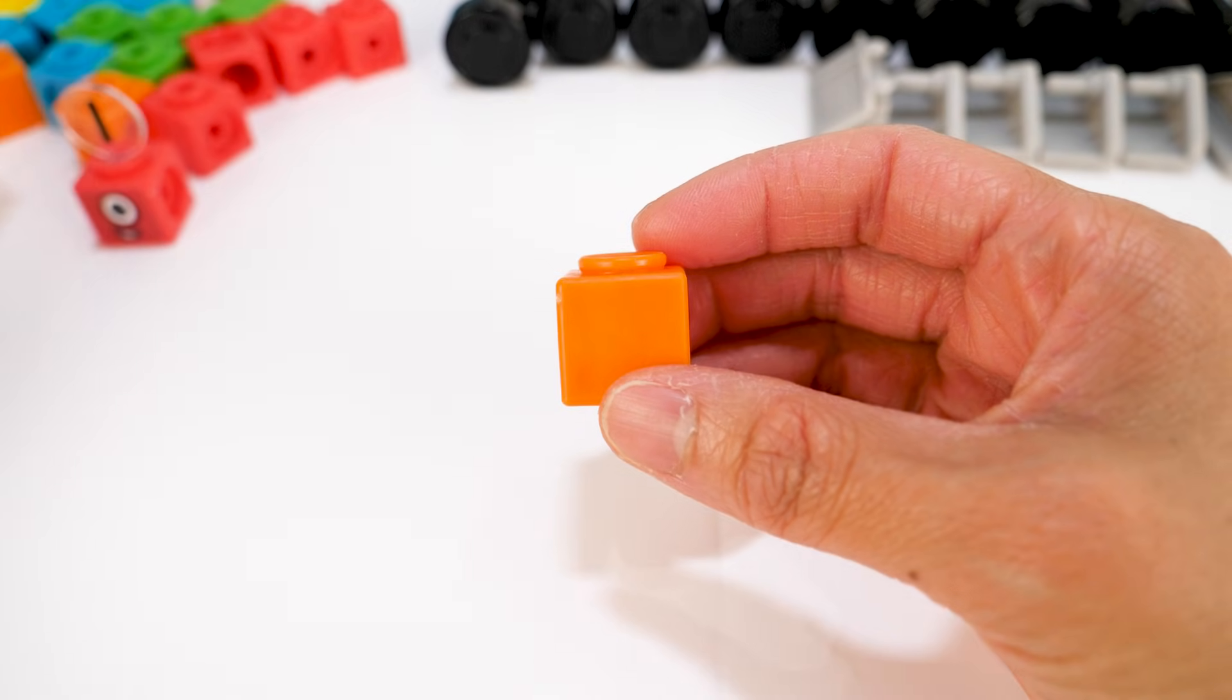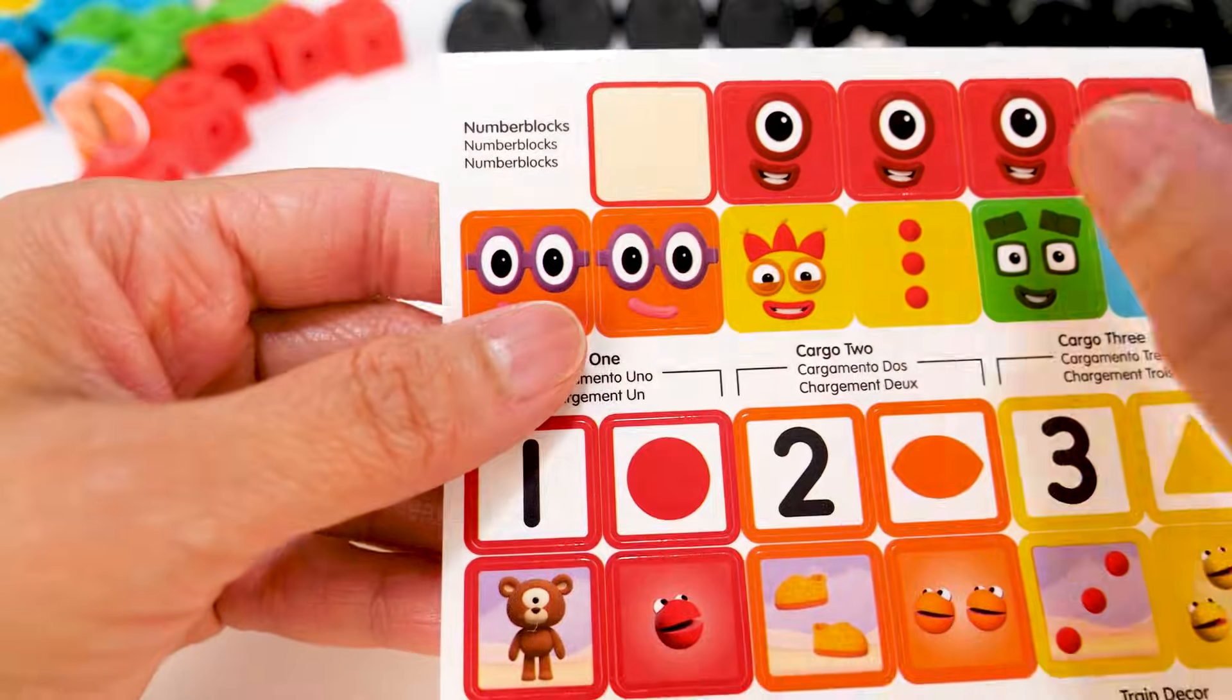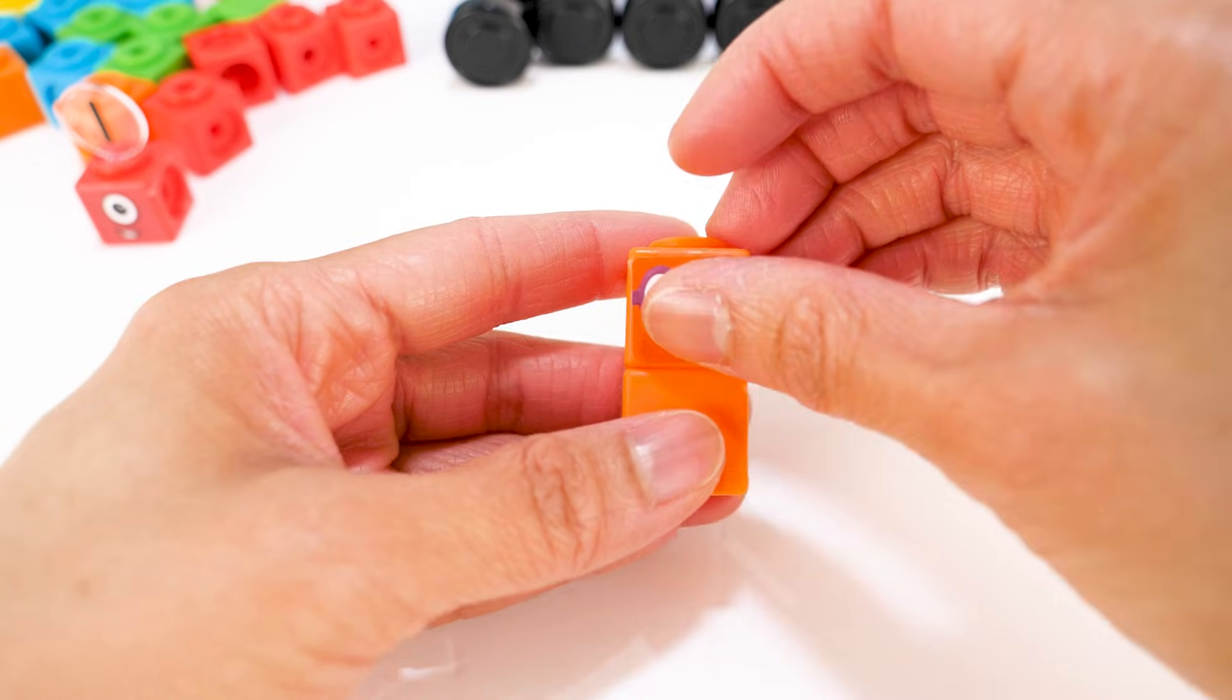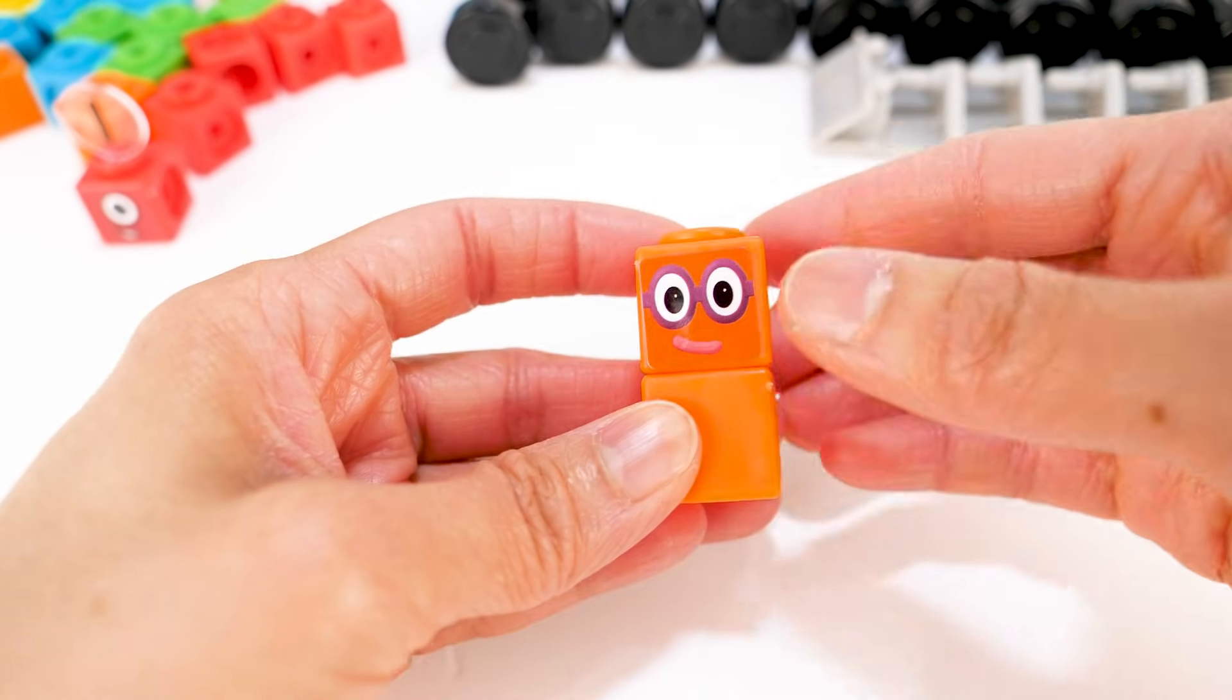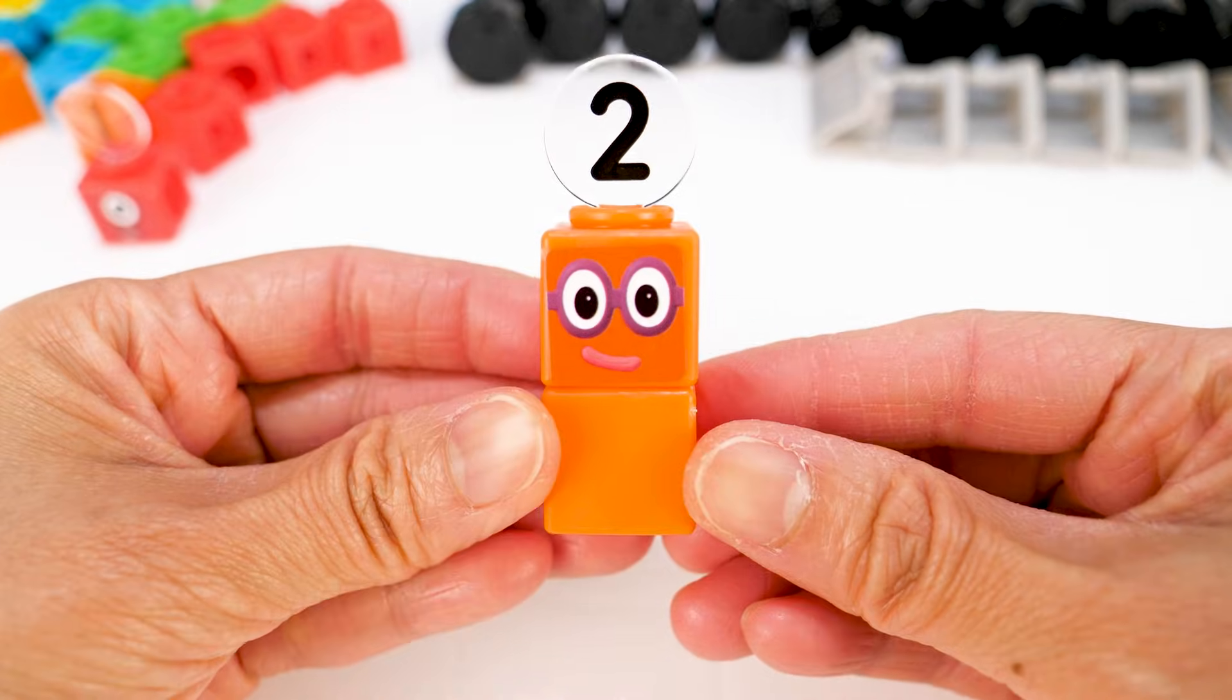Let's build number block 2. A face sticker for number block 2. And the numbering 2. Number block 2.